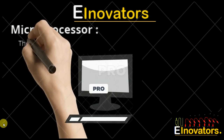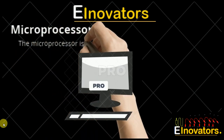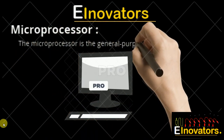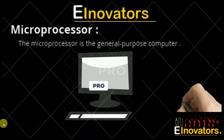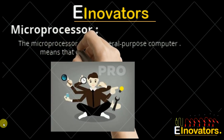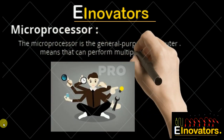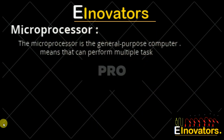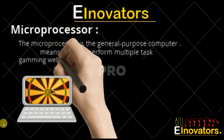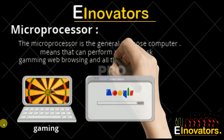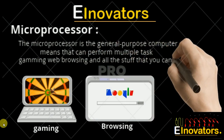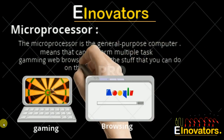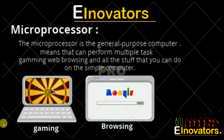Before moving towards the Arduino series, let's learn about some differences between microcontrollers and microprocessors. The microprocessor is a general purpose computer, meaning it can perform multiple tasks at the same time, like gaming, web browsing, and all the stuff that you can do on simple computers.